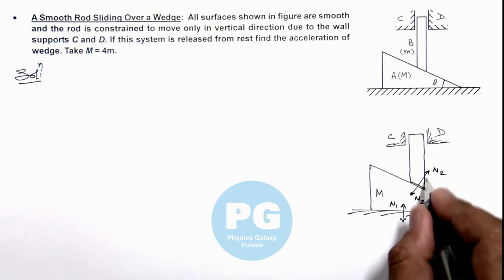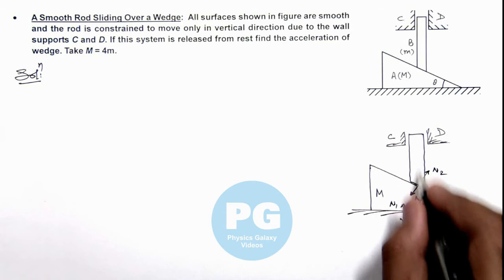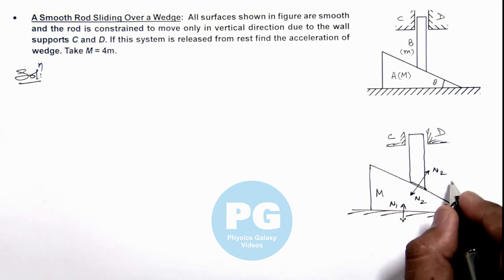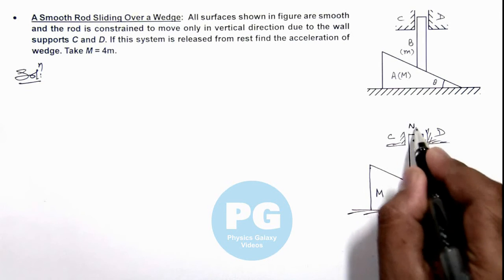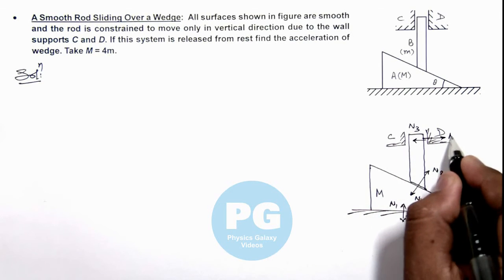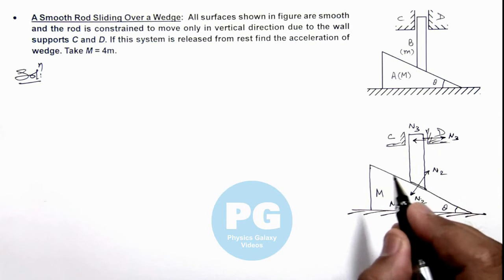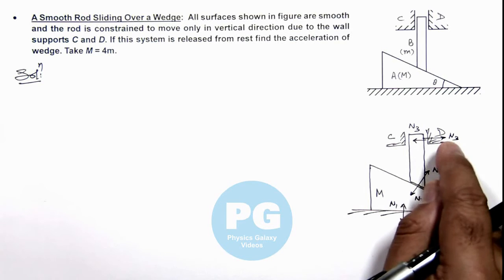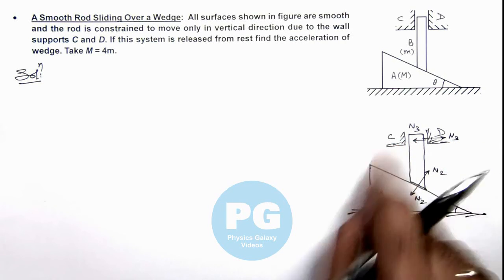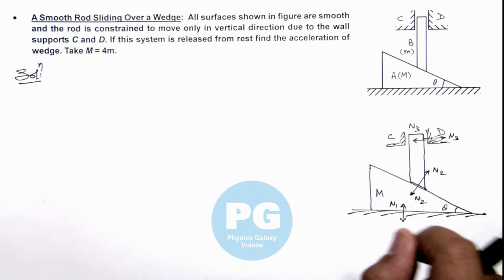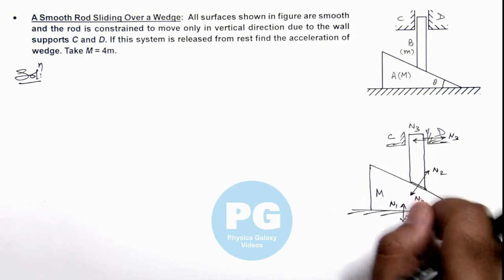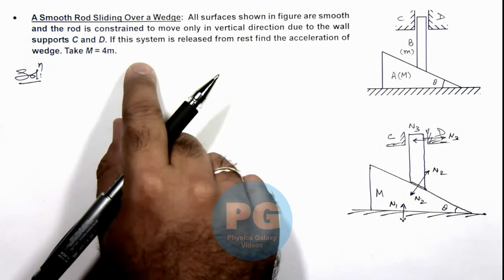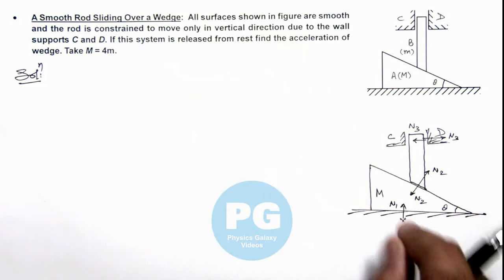Due to the horizontal component of force N2, the rod has a motion tendency toward right, which it will not move because of the support D. It will exert a force N3 onto it, a normal reaction is developed here. As the rod has a tendency to slide toward right there won't be any contact force between support C and N3. However we are not interested in horizontal motion of rod because it is already given to us that rod is constrained to move only in vertical direction.